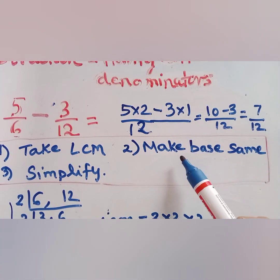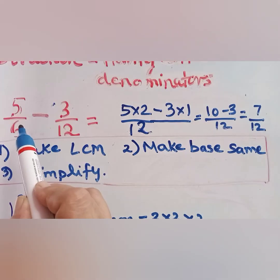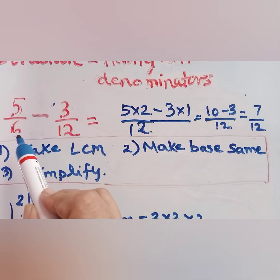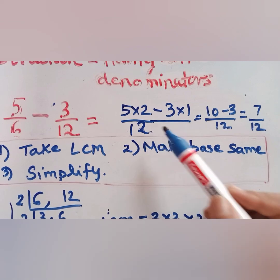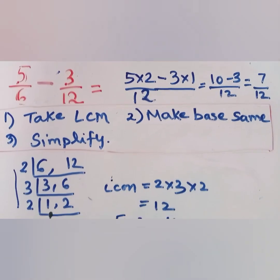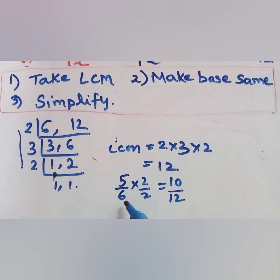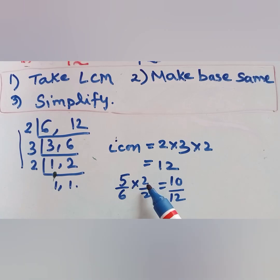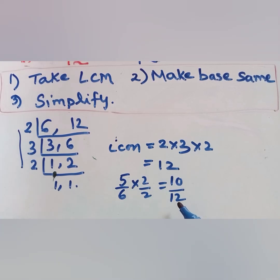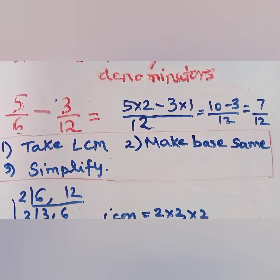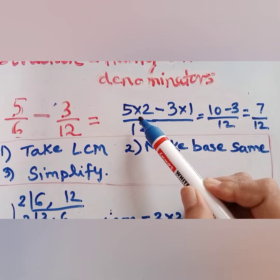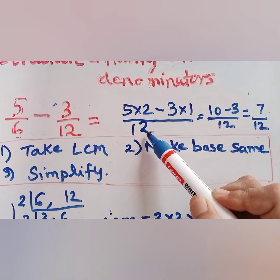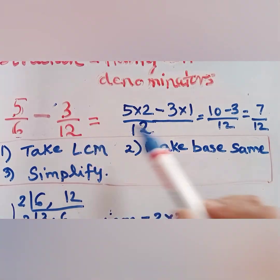Now we have to make the base same. For 5 by 6, we need to make the denominator 12 because our LCM is 12. We multiply numerator and denominator by 2: 5 × 2 = 10 and 6 × 2 = 12. So we write 5 × 2 in the numerator. The denominator is now 12. For 3 by 12, the base is already 12, so it is already correct.